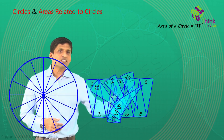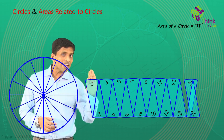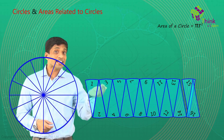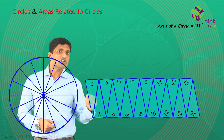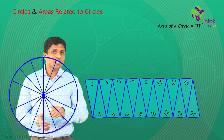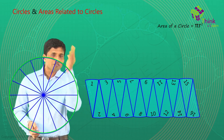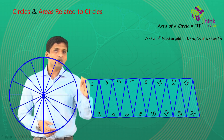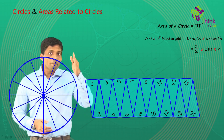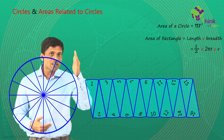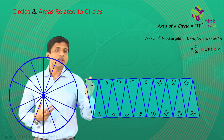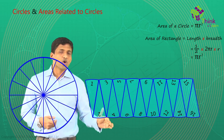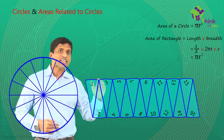If you bring all of them one by one and keep them here, what you get is nothing but a rectangle. On top you can see numbers 1, 3, 5, 7 up to 15 — which is basically half of the sectors. The bottom also has half, which is 2, 4, up to 16. The total length is the full perimeter, which is 2πr, so one side will be half of that — πr. The breadth of this rectangle is nothing but r. So, area of this rectangle is length times breadth, which is πr times r — giving us πr square. That is area of a circle visualized using a rectangle.